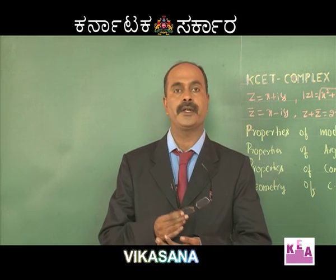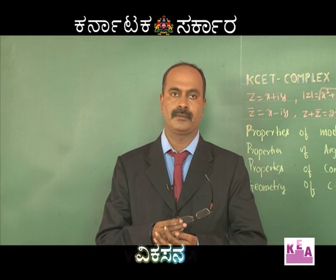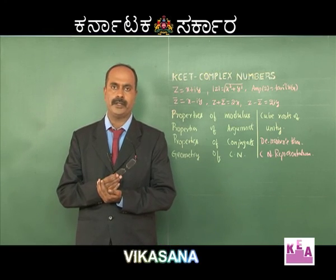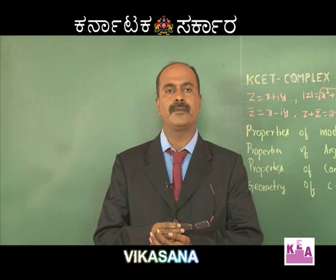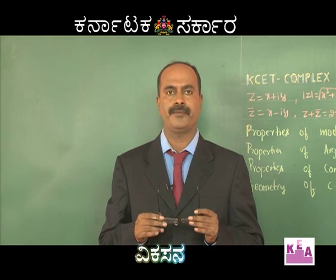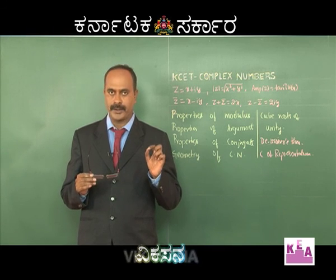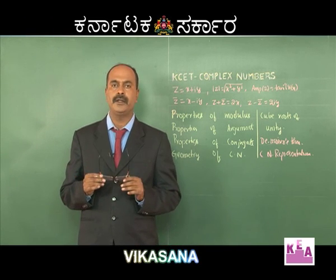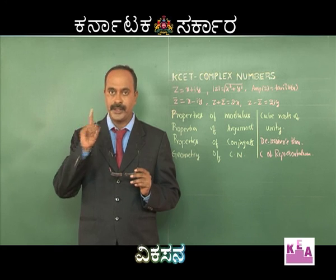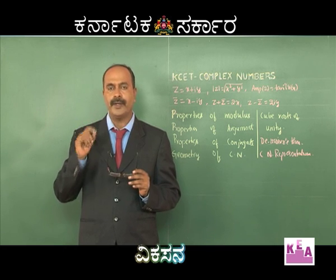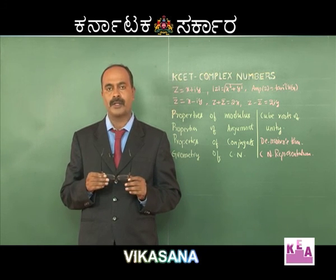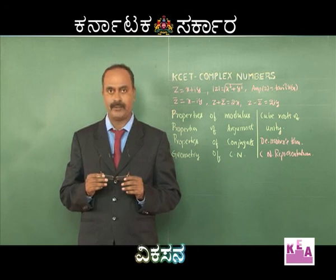Where the real part of z is x and the imaginary part of z is y. Remember, both x and y are real numbers. Modulus of z is given by √(x² + y²). Amplitude of z is given by tan⁻¹(y/x). Conjugate of z is given by x − iy. So z + z̄ = 2x, z − z̄ = 2iy, and z·z̄ = x² + y², which equals |z|².